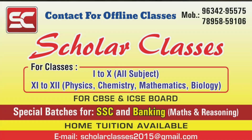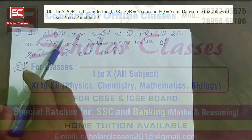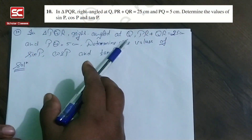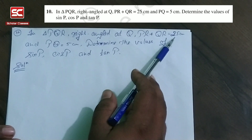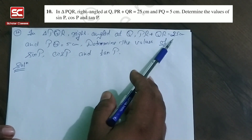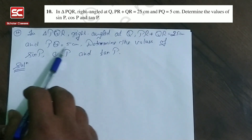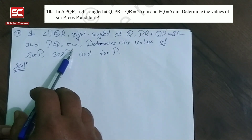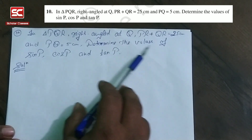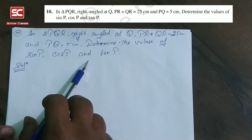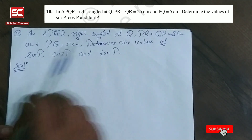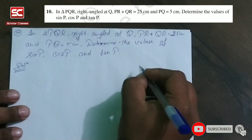Now we discuss question number 10. In triangle PQR, right angle at Q, PR plus QR is equal to 25 and PQ is equal to 5 cm. Determine the value of sin P, cos P and tan P.